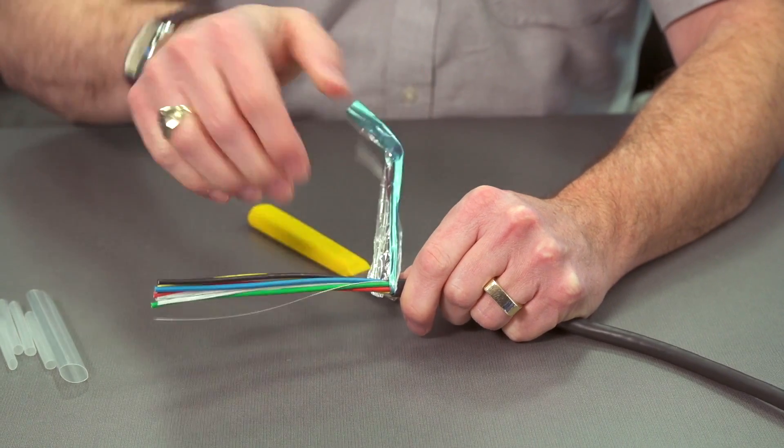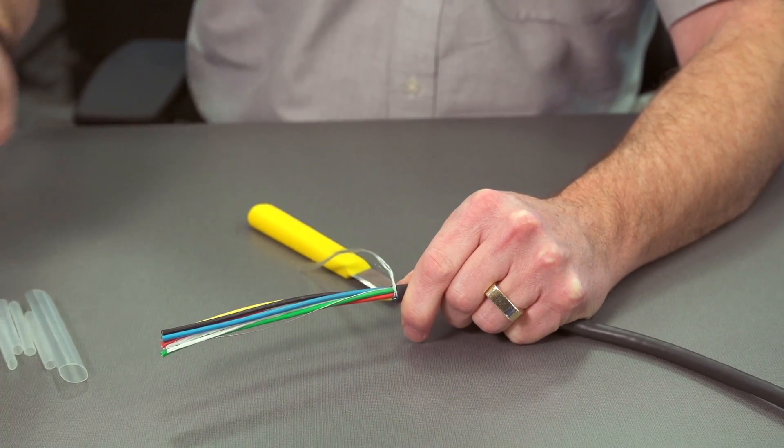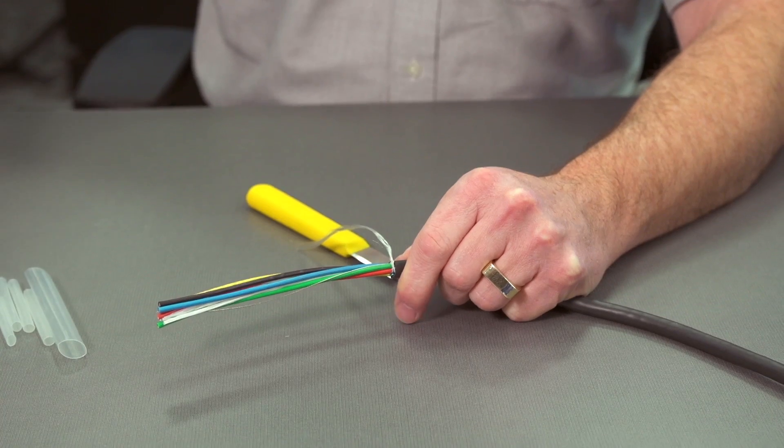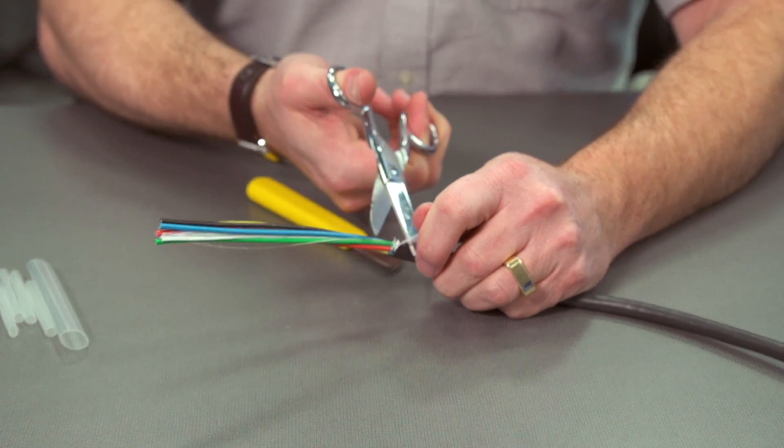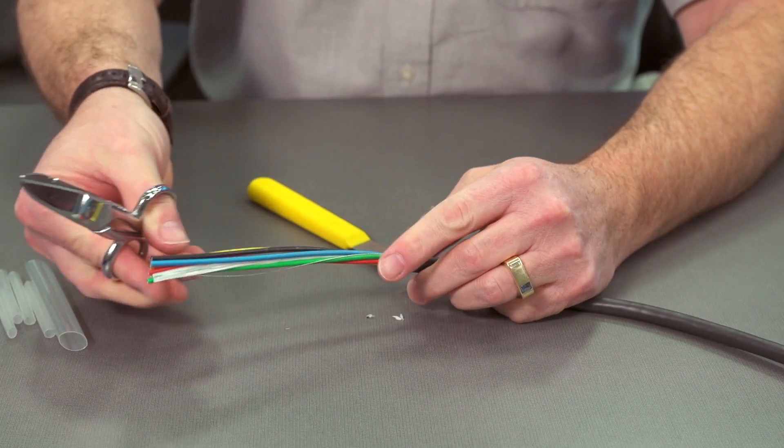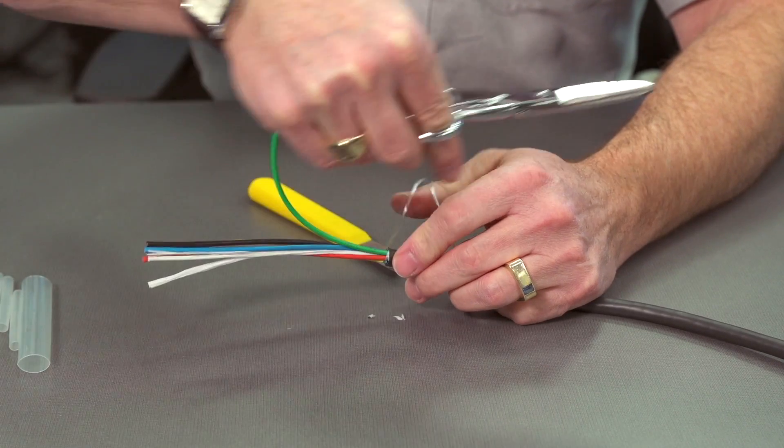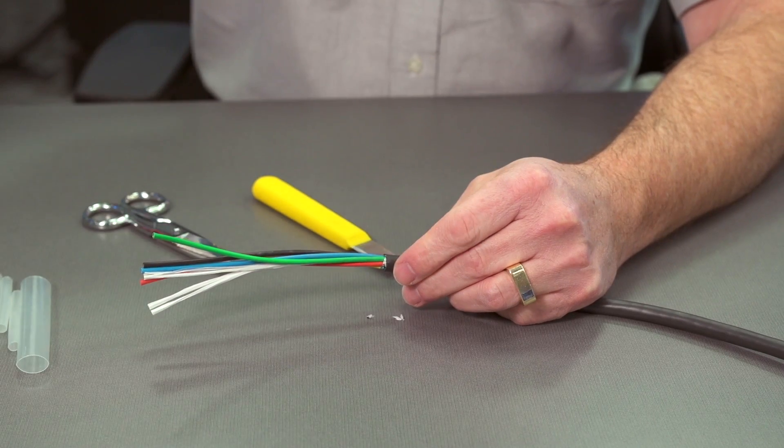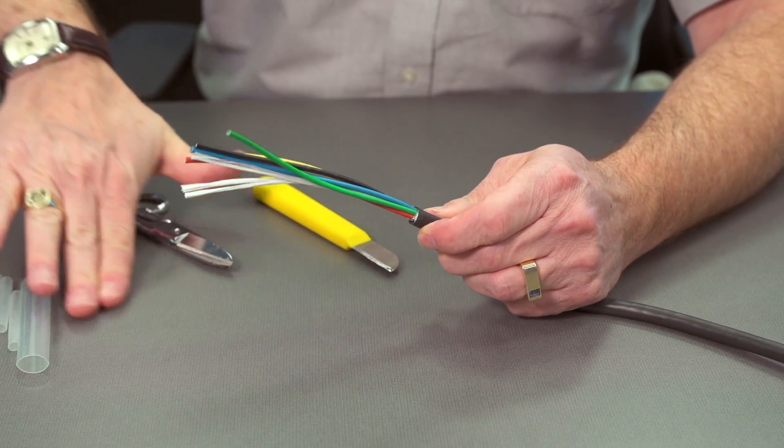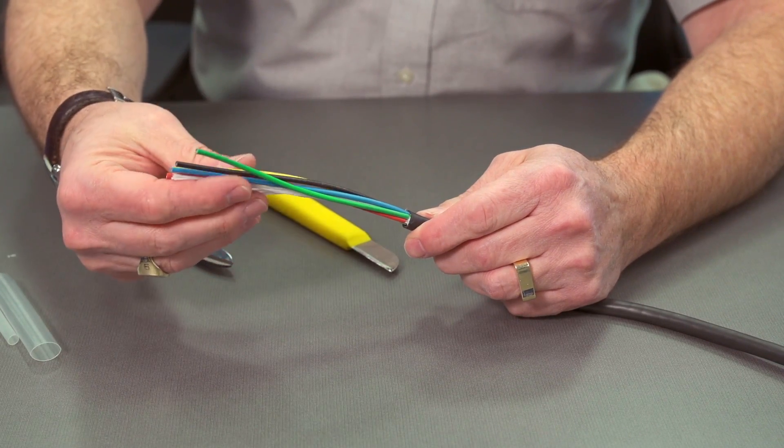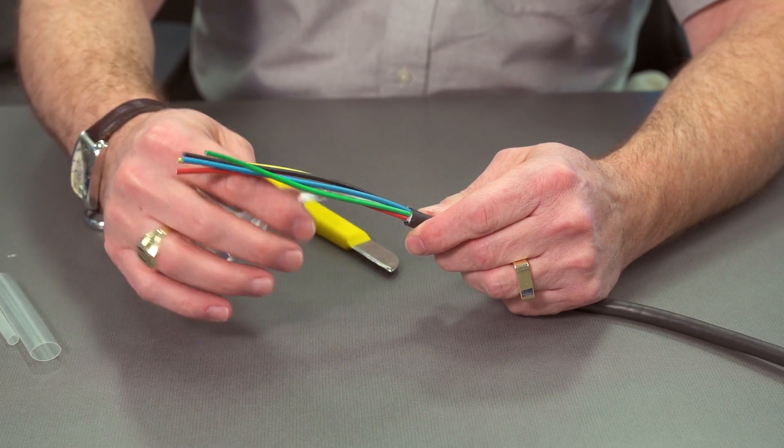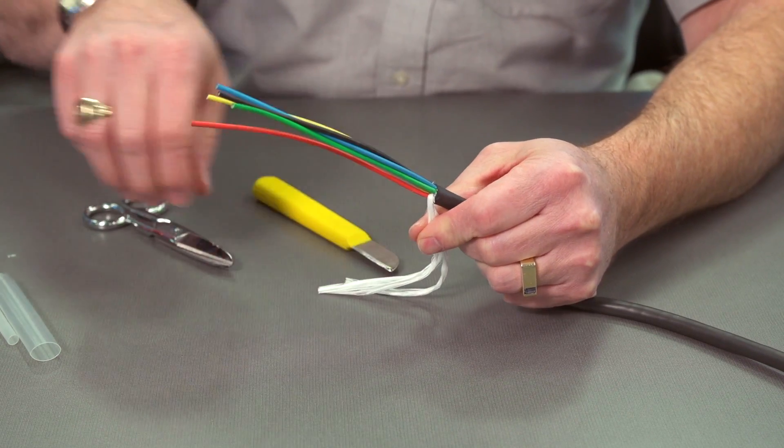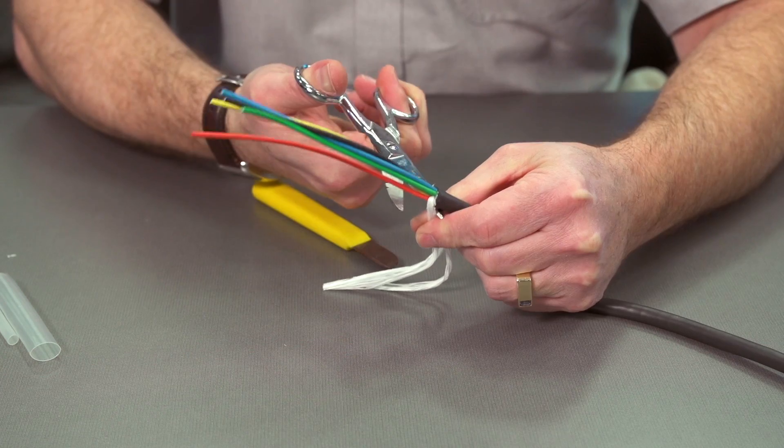We remove the foil, use our scissors to cut back the pull string, and there's also a strand in this particular cable to cut off as well. We have a couple of strings on the inside to help protect and space those coax cables. Cut those.